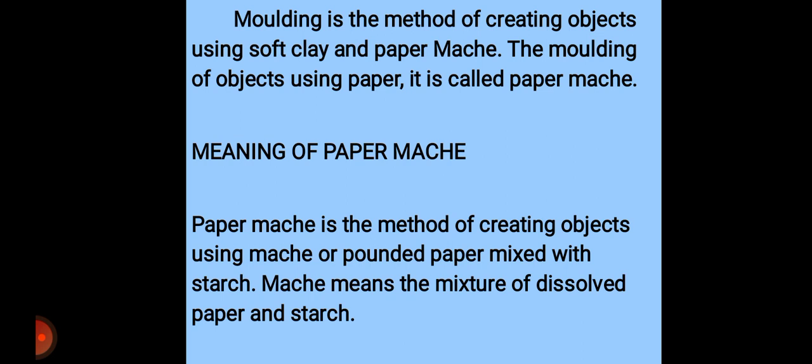Paper mache is the method of creating objects using mash or pounded paper mixed with starch. The starch will help this paper to come together and stay together. When you pound the paper, then you create your objects with starch to help it stay together. Mache means the mixture of dissolved paper and starch.